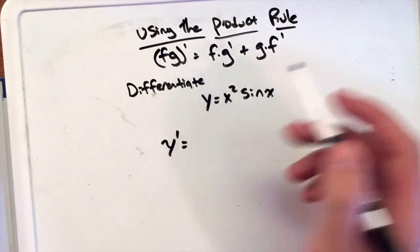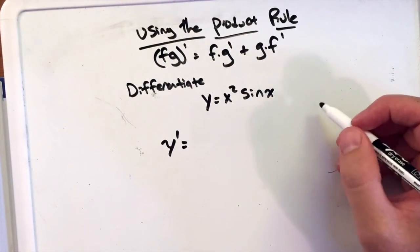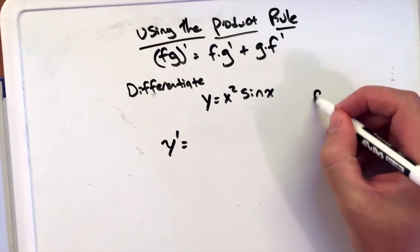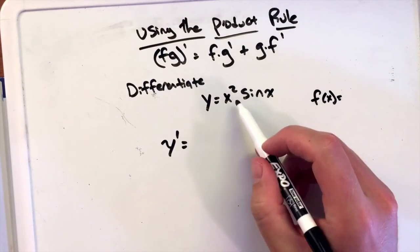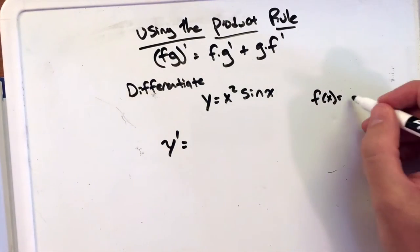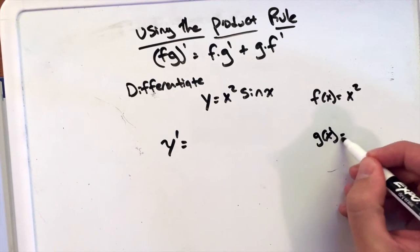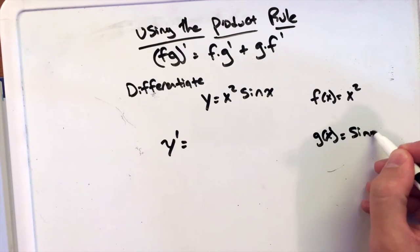So we're going to follow our step up here. Now one thing I suggest when you're first starting out and deriving using the product rule, state what f of x is equal to. So we're going to say f of x is equal to x squared and we're going to state that g of x is our sine of x.